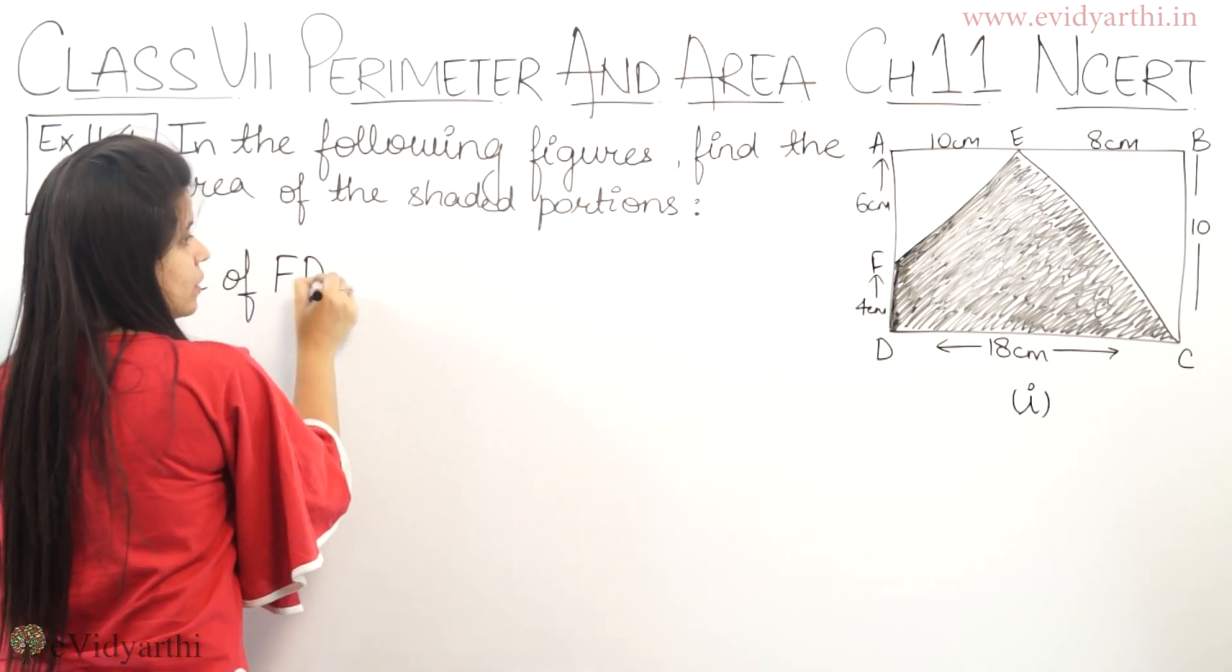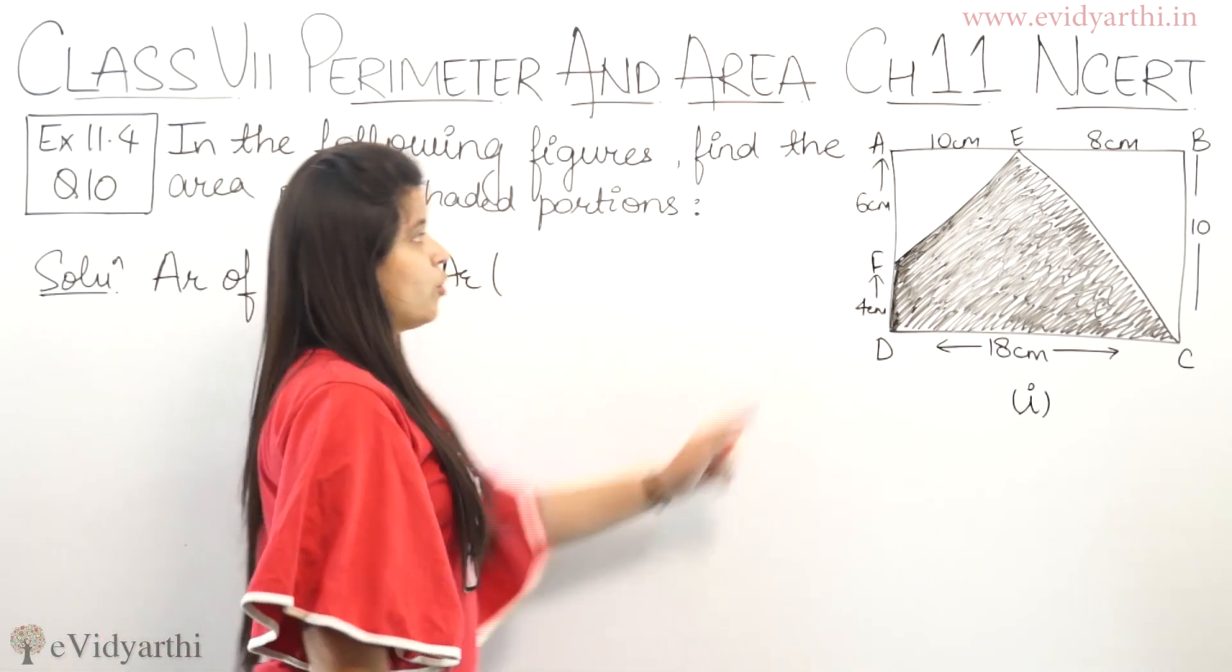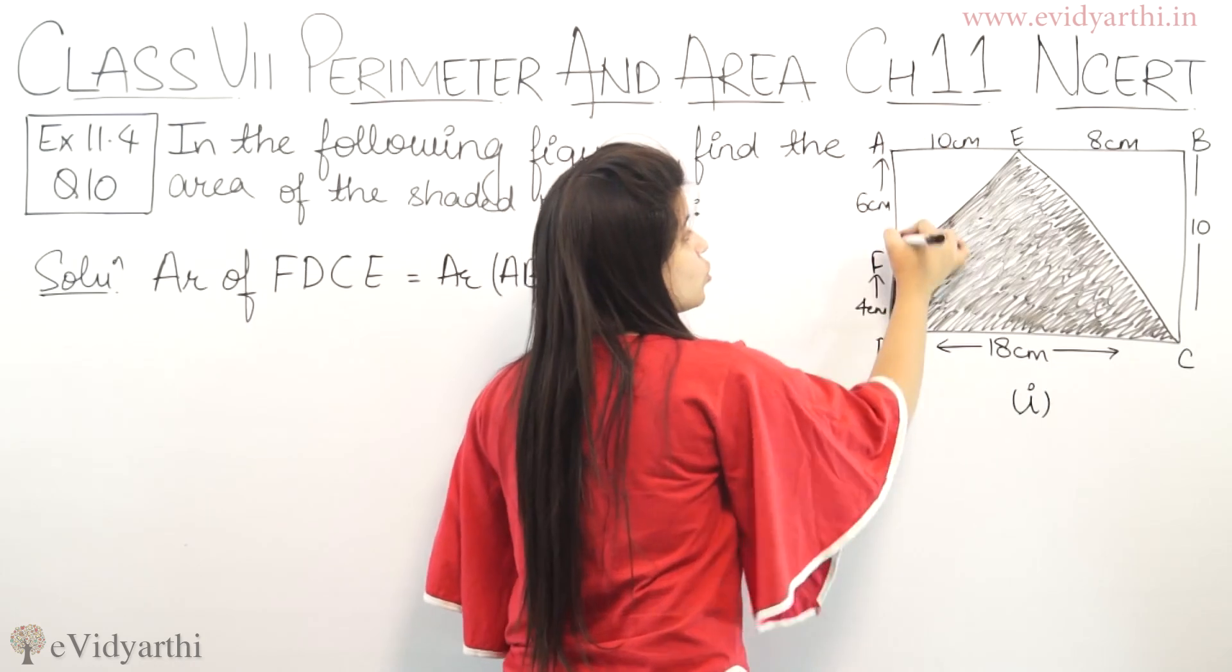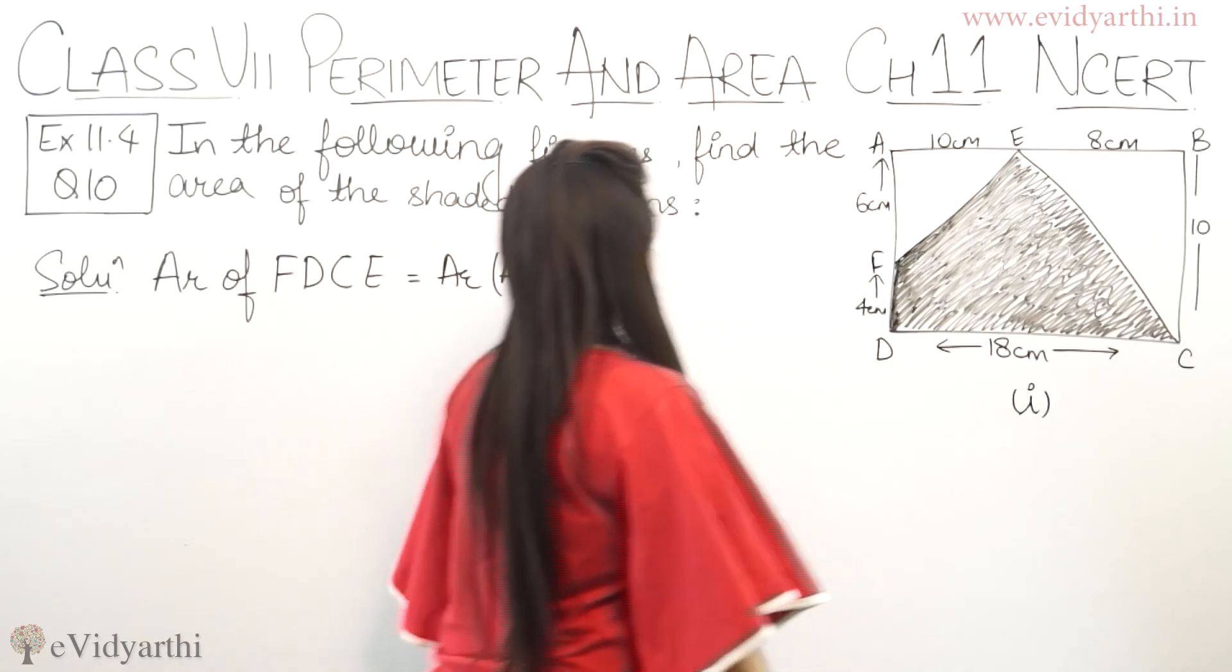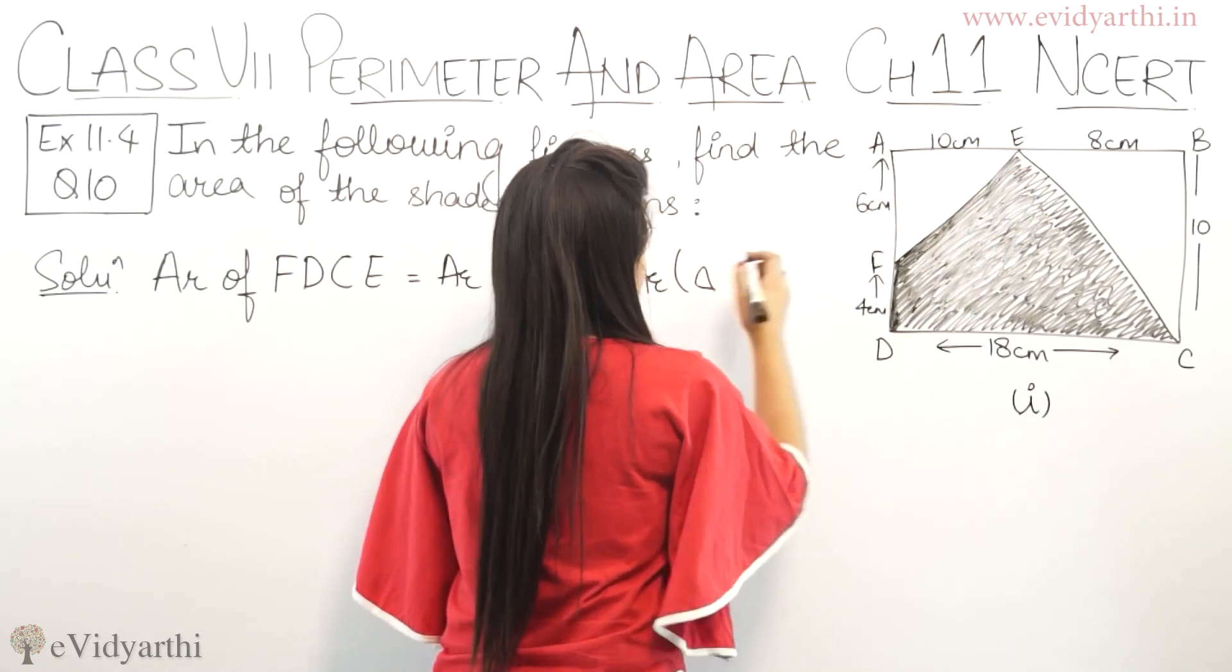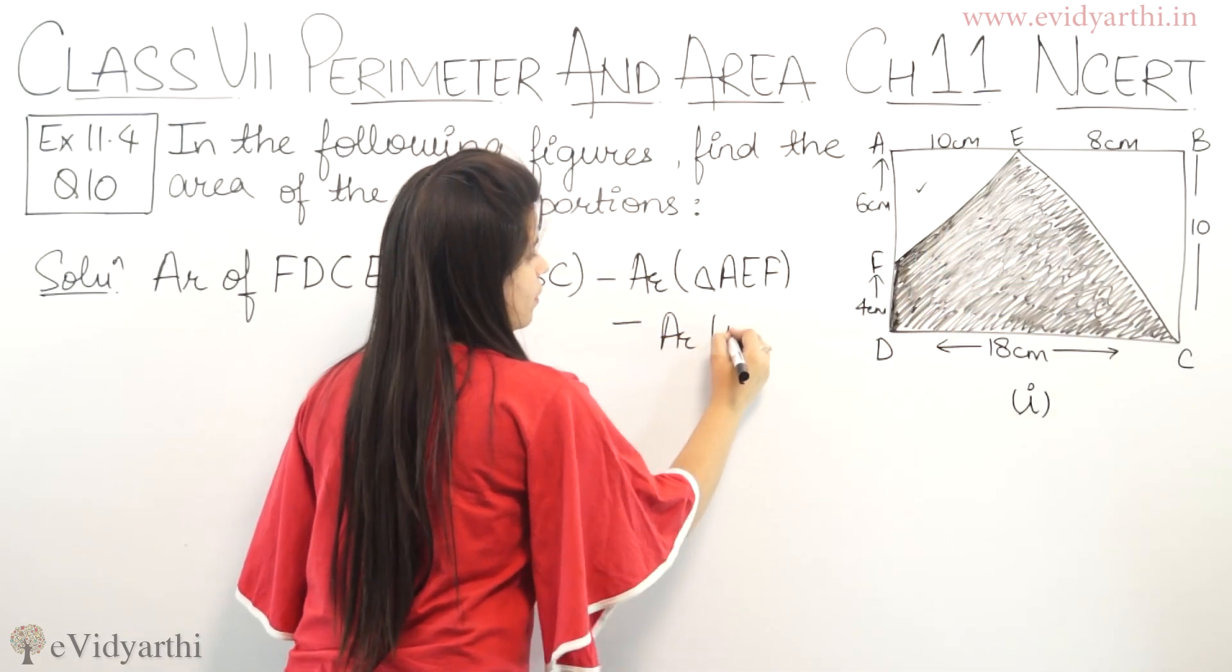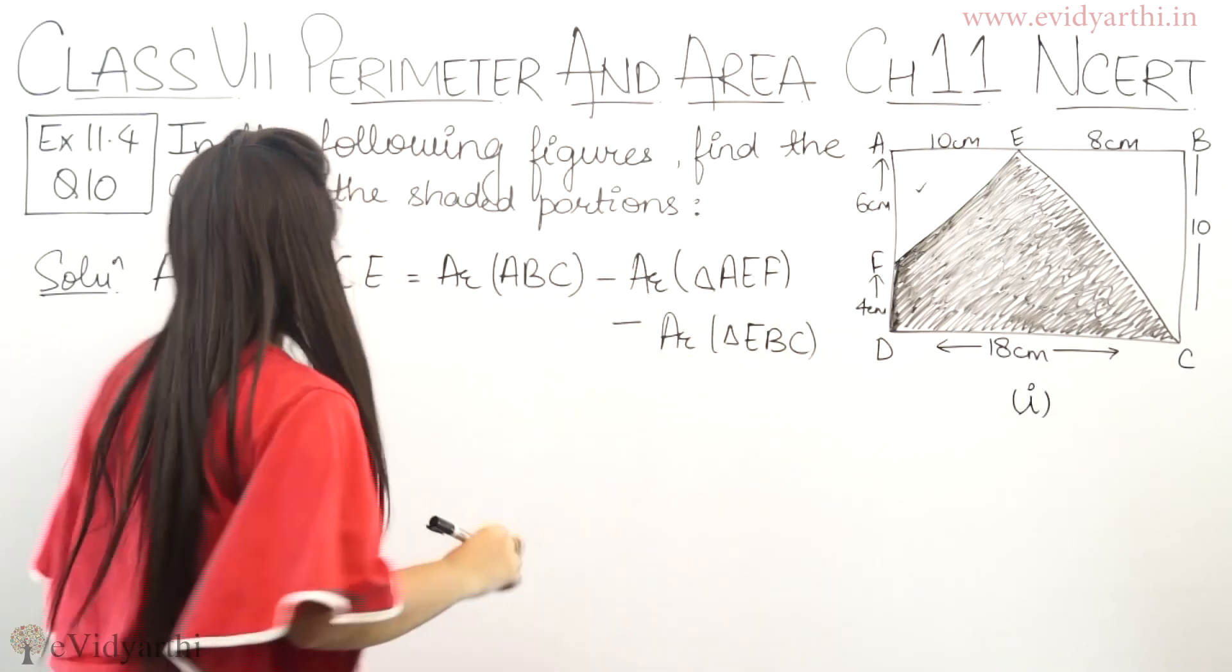Area of FDCE will be equal to area of full rectangle ABCD minus the two triangles. This is triangle AEF and this is triangle EBC. So we need to subtract both triangles from the rectangle.